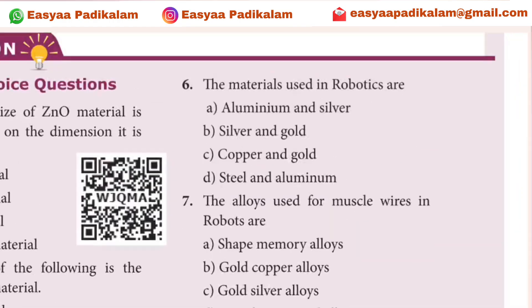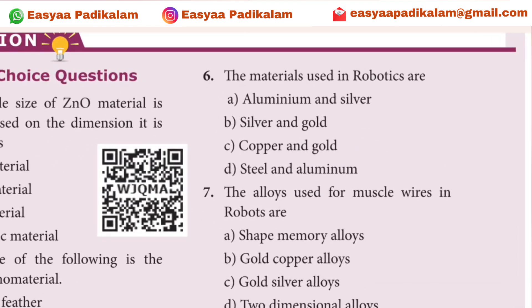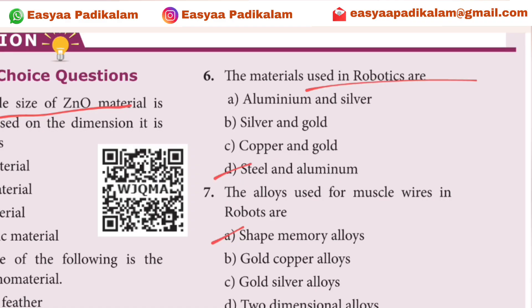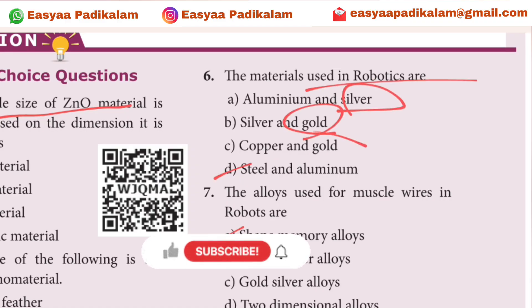Sixth question: What materials are used in robotics? Silver, gold, steel and aluminum.